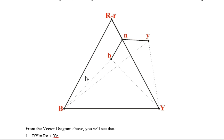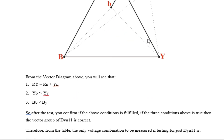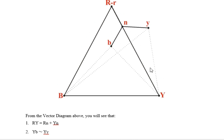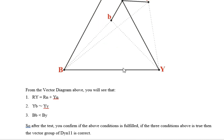The conditions to confirm a DYN 11 connection are: (1) Capital R-Y should be equal to R-n plus Y-n; (2) Capital Y-B should be approximately equal to y-y; (3) Capital B-B should be less than b-y. These three conditions must be fulfilled to confirm that the vector connection is DYN 11.